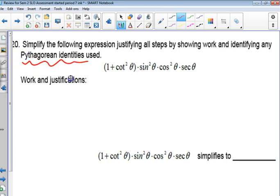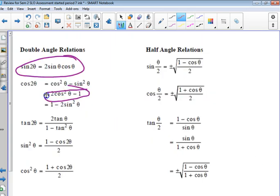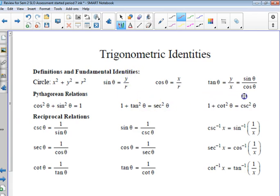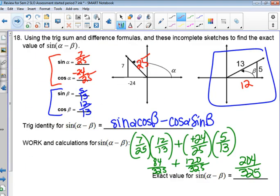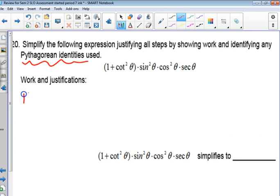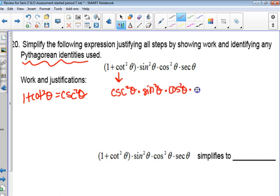There is one Pythagorean identity, and you have to identify it to get full credit. What is the one Pythagorean identity you're going to use? Go to the reference sheet, find where it says Pythagorean identities, and it says 1 plus cotangent squared can be exchanged for cosecant squared. So I'm actually going to write that over here because it says identify which one you used. So that means this is trading for cosecant squared. Then I have sine squared, I'll leave that alone. I have cosine squared, I'll leave that alone, and secant.